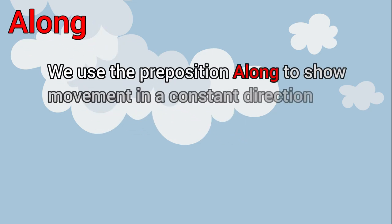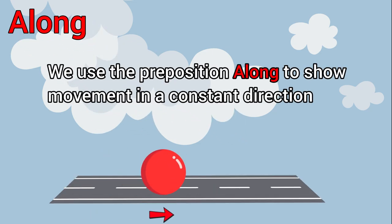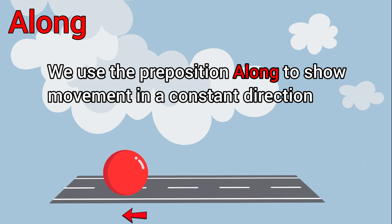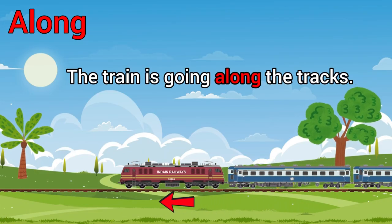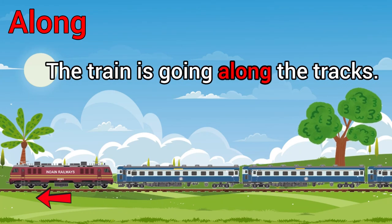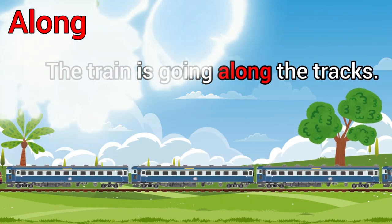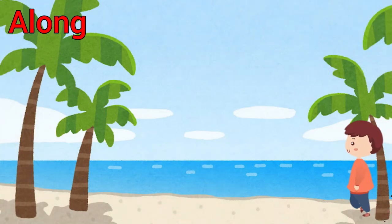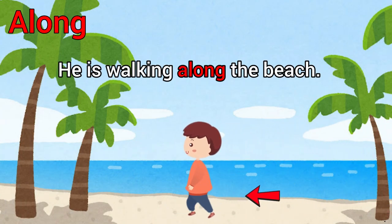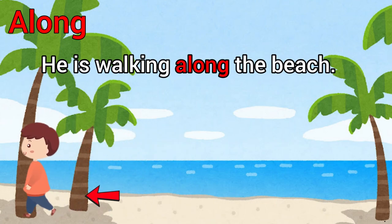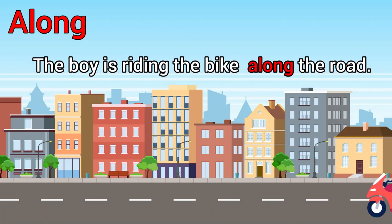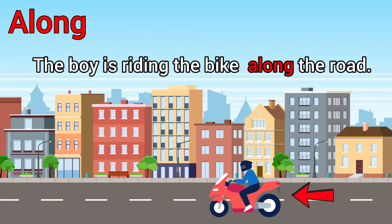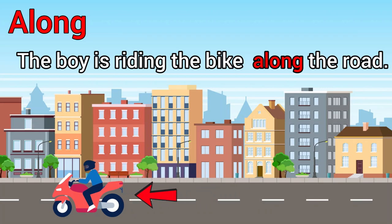We use the preposition 'along' to show movement in a constant direction. Examples: the train is going along the tracks. He is walking along the beach. The boy is riding the bike along the road.